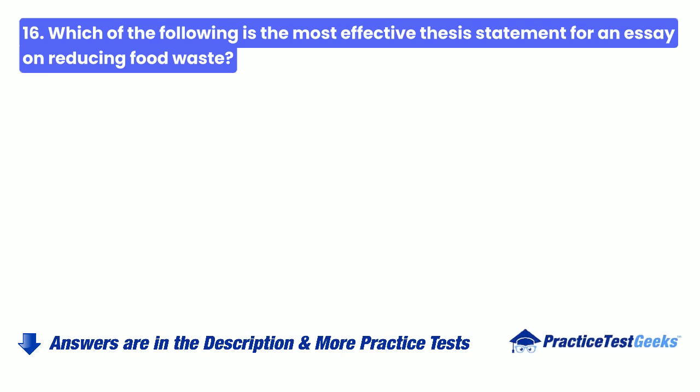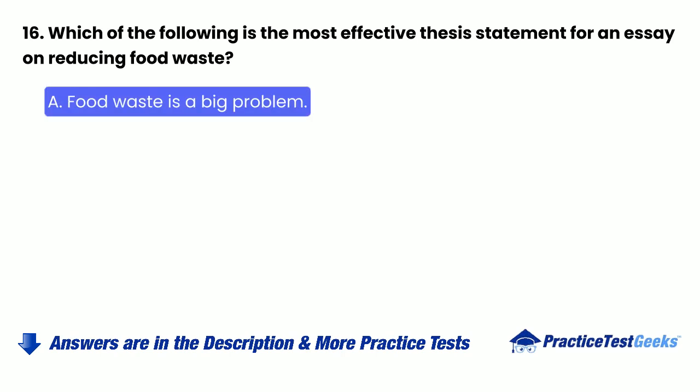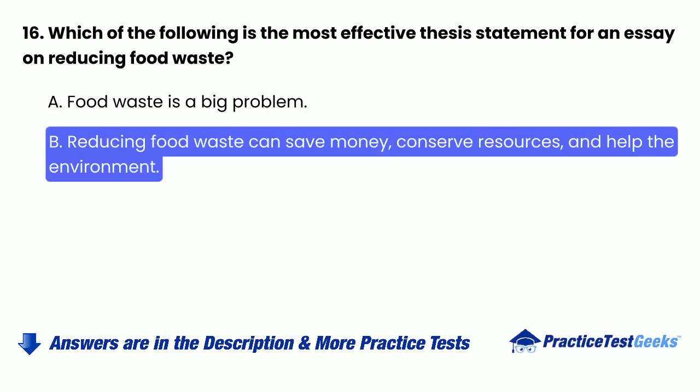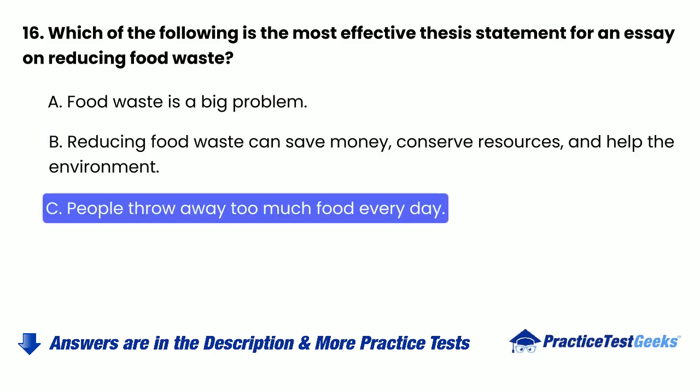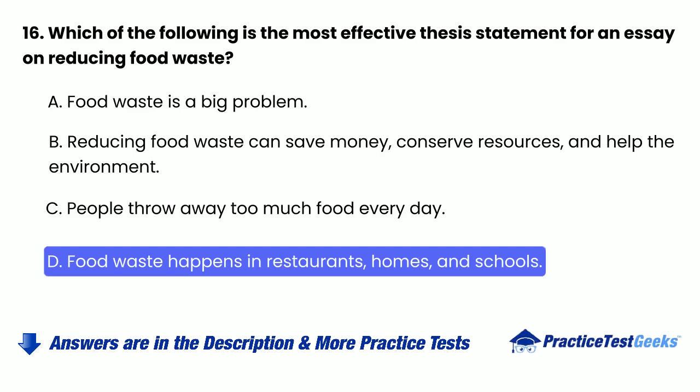Question 16: Which of the following is the most effective thesis statement for an essay on reducing food waste? A. Food waste is a big problem. B. Reducing food waste can save money, conserve resources, and help the environment. C. People throw away too much food every day. D. Food waste happens in restaurants, homes, and schools.